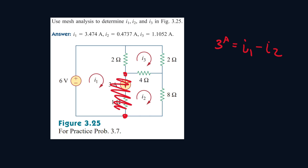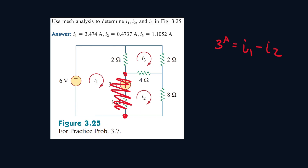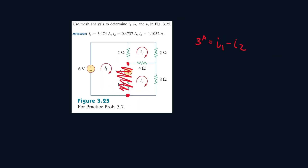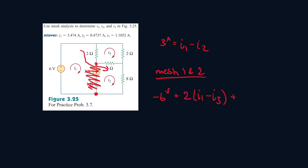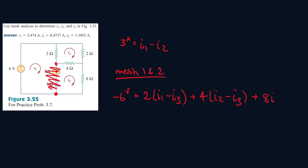Now let's ignore this whole thing and treat this whole section as one entire mesh. So for mesh 1 and 2: I1 enters the negative 6-volt source, plus 2(I1 minus I3). Then entering the I2 mesh: plus 4(I2 minus I3), plus 8(I2).